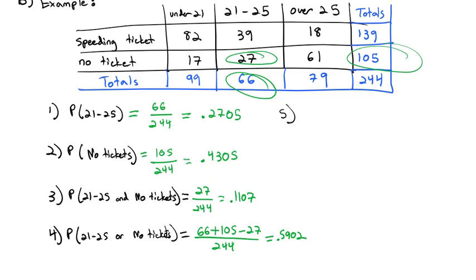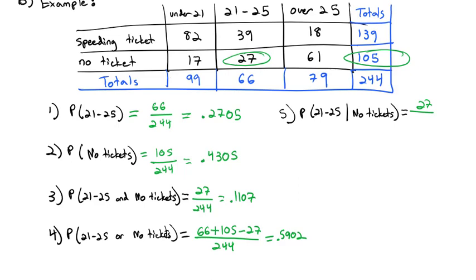We can even do given probabilities. Let's do the probability that we're in that 21 to 25 range given we know the person has no tickets. Well, with a given probability, we are looking for both of them, or the overlap, divided by the given information. So where they overlap 21 to 25 and no tickets, they overlap with 27. But we're going to divide by the given information. This time it's not the 244 because we've shrunk our sample size. Now we're just interested in those that have no tickets. We're only interested in that 105. And so with the given information shrinking the sample size, now the probability is 0.2571.